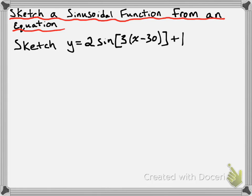First thing that we want to do is recognize all the properties of this function. So we're going to list out some of these properties. The first property is the middle axis. The middle axis is pretty easy — you can get that from the c value, which in this case is positive 1. So we're going to have y equals 1 for our middle axis.